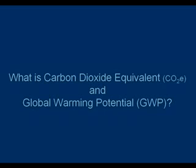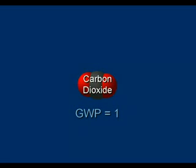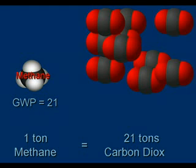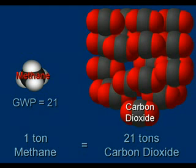What is carbon equivalence and global warming potential? Not all greenhouse gases are equal. The global warming potential is a metric used to compare emissions among different greenhouse gases. The global warming potential of carbon dioxide is one, and the global warming potential of other greenhouse gases are expressed relative to carbon dioxide. For example, methane has a global warming potential of 21, meaning each metric ton of methane emissions has 21 times as much impact on global warming as a metric ton of carbon dioxide.